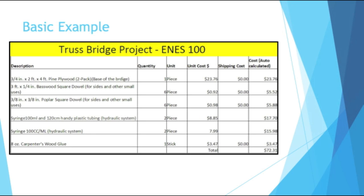Quantity — so how much of each. Unit is important to note because if you're talking about direct parts, the unit would just be a piece. But when you're talking about things like glue, it could be milliliters, liters, gallons, and so on. In this example, they also have unit cost and shipping costs. So this would probably be a Bill of Materials that purchasing would use — a purchasing BOM.